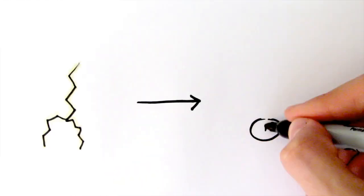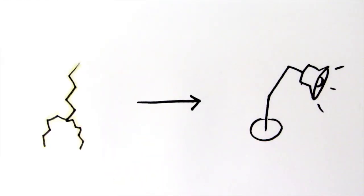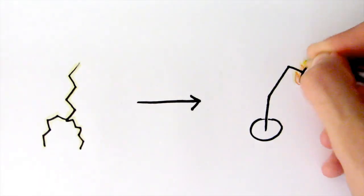In a lamp, the electrical input is converted into light energy. However, not all the energy put in is turned into useful energy. Some of it is turned into energy we don't need, such as heat.